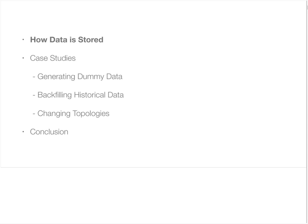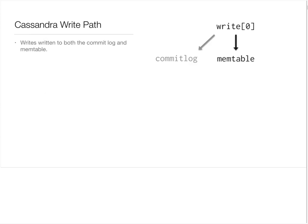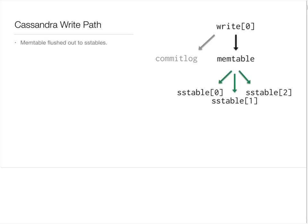We're first going to go over how data is actually stored in Cassandra and what the write path is, and then look into three specific case studies for each use case. When a write comes into Cassandra, it is first written to the commit log and the mem table. We're going to focus on what happens on the mem table side. The writes are stored in sorted order on the mem table, and then eventually, when the mem table reaches a certain size, it is flushed out into SSTables — sorted string tables.